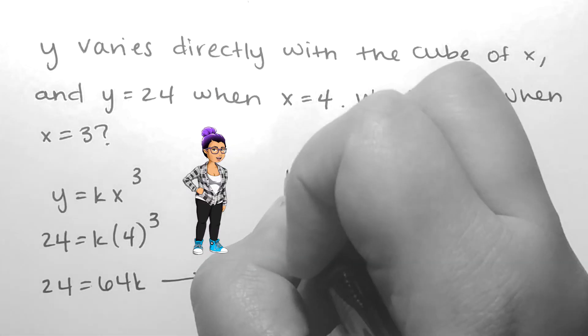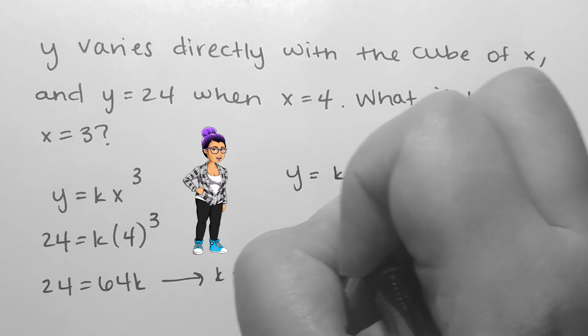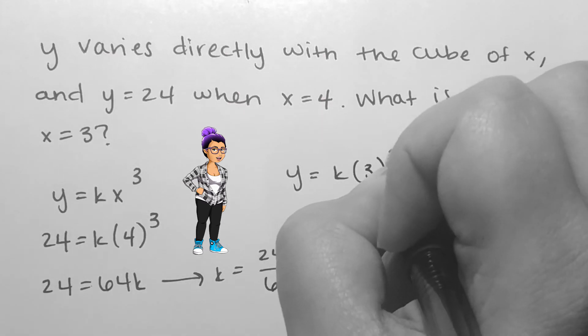If I cube 4 and then divide both sides by it, then simplify, I will get that k is 3 over 8.